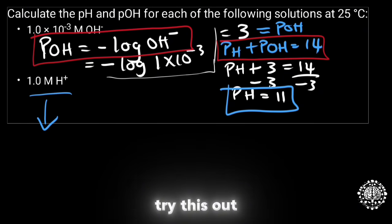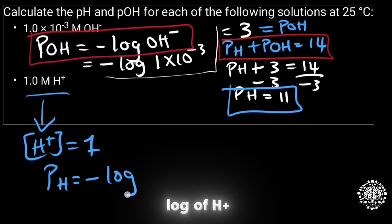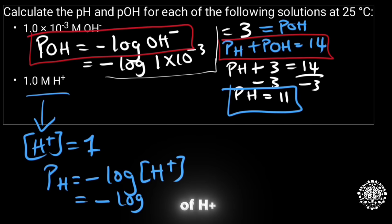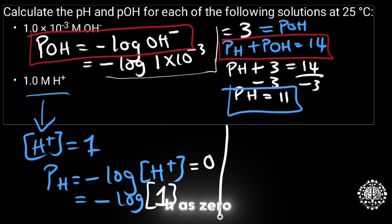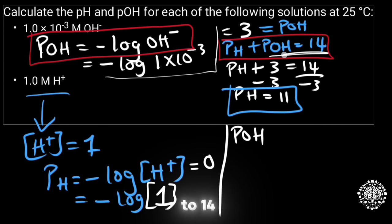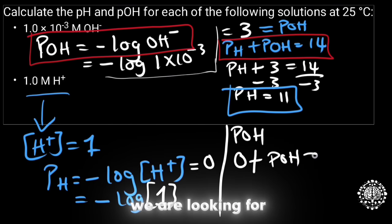For the second question, we are given H⁺ equals 1. To find the pH and pOH, we do the same thing: pH equals negative log of H⁺. Substituting, pH equals negative log of 1, which gives us pH equal to 0. For the pOH, we use pH plus pOH equals 14. With pH equal to 0, we get 0 plus pOH equals 14, so pOH equals 14.